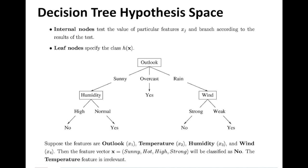Suppose you have this decision tree already built. To make a decision, you first look at the outlook. If it is sunny, you take the sunny branch and arrive at humidity. You ask whether humidity is high or normal. If it's high, you take the leftmost branch and decide not to play tennis. If humidity is normal, you take the next branch and decide to play tennis. Similarly, you can traverse all branches to arrive at the final decision.